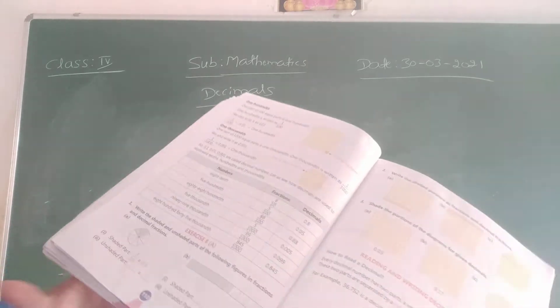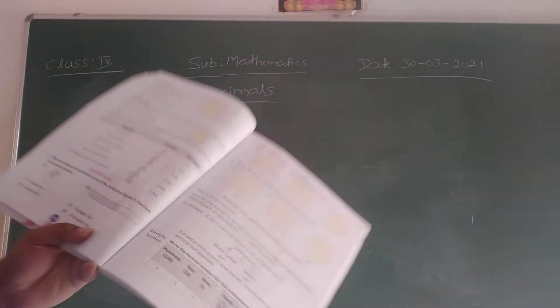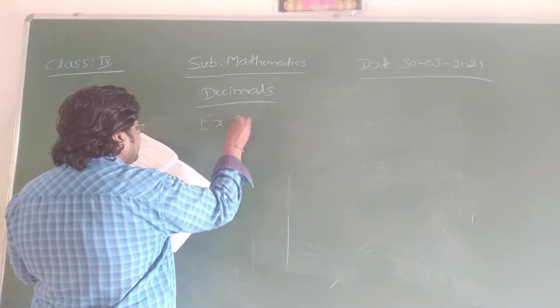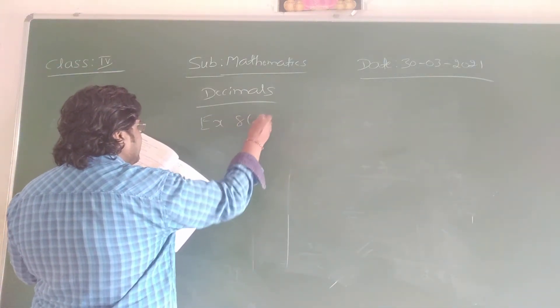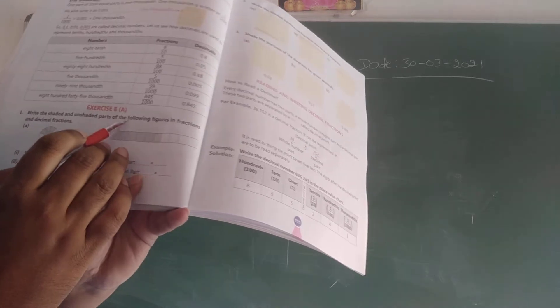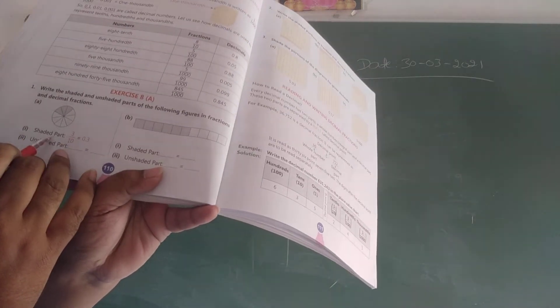Next, come to exercise 8a. In exercise 8a, it is a very simple exercise — we took this in the previous classes. Now, what is there here? Write the shaded and unshaded parts of the following figures as fractions and decimal fractions.